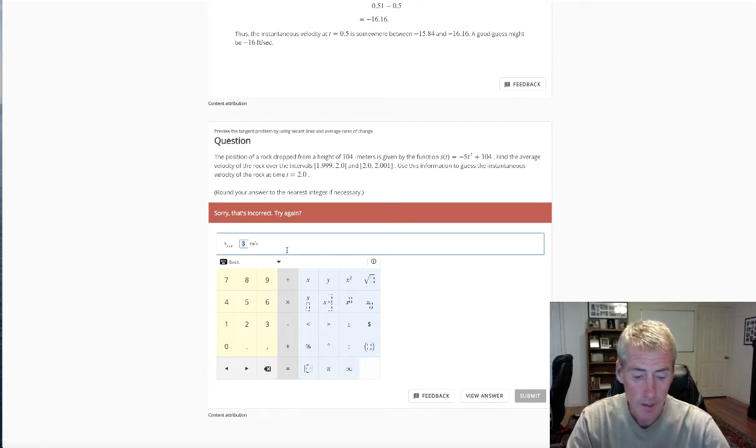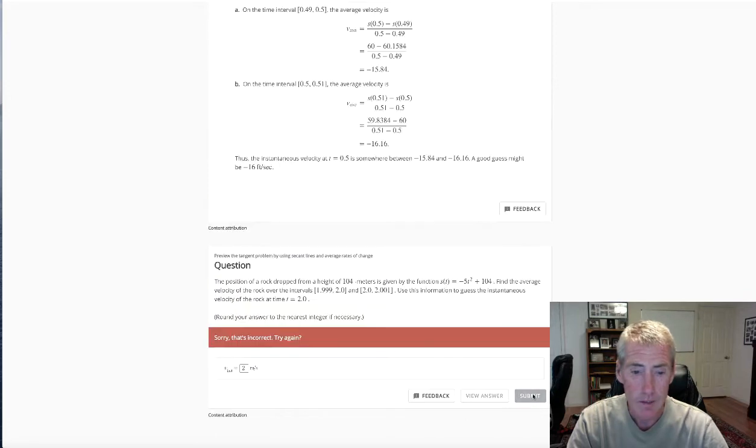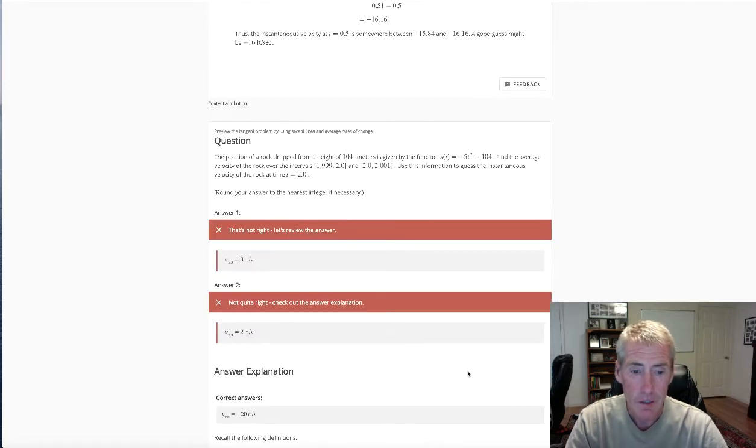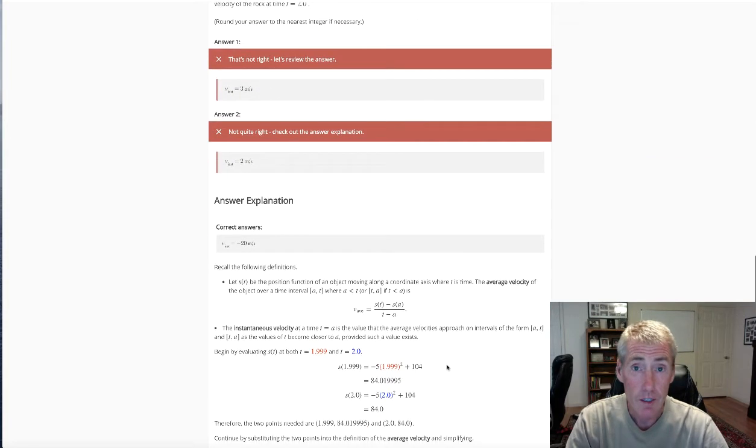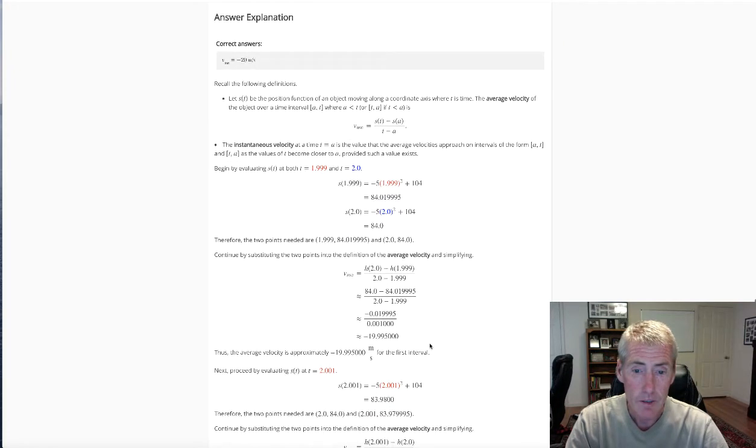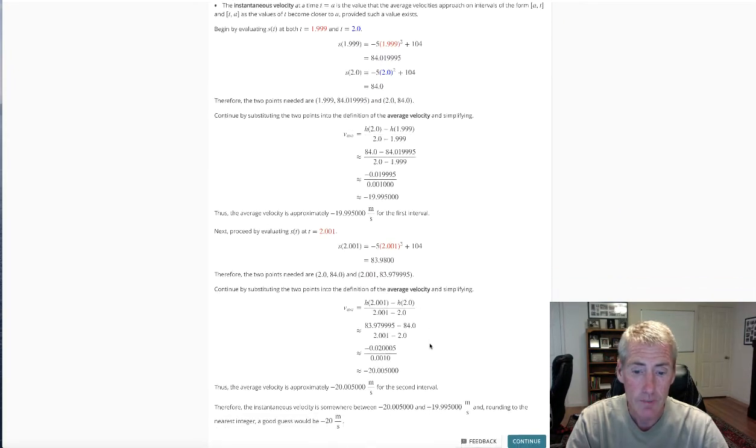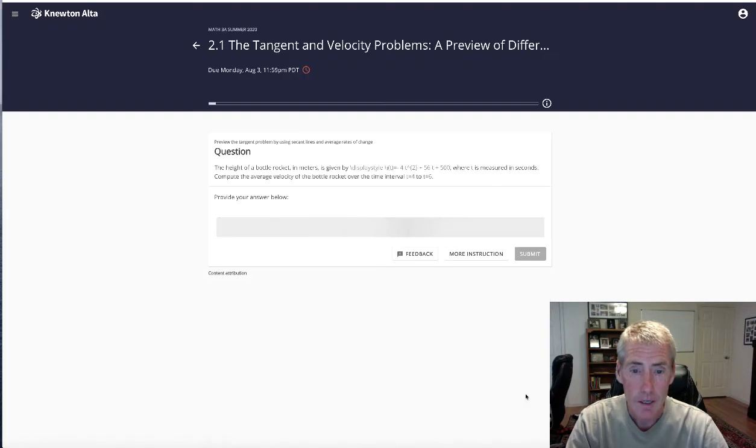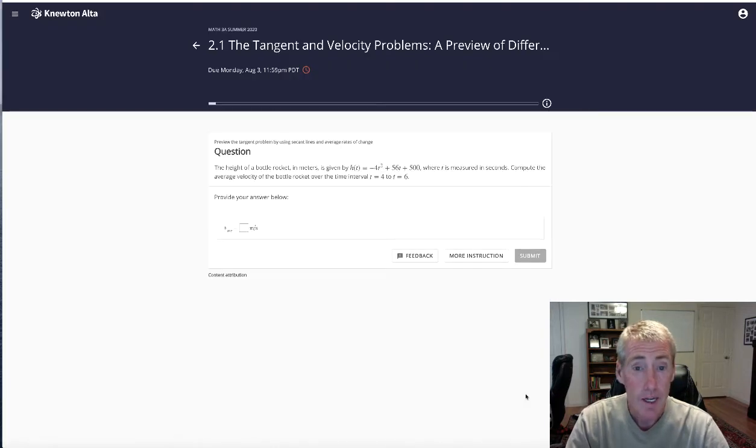So you could then try another answer. Maybe the answer is 2. And then you say submit. And they say, no, sorry, you've tried twice. Here's our explanation. You should have gotten a negative 20. And here's why. So you plug in these numbers and they explain how to do it. And then you say, all right, I'm ready to continue. And then they create a similar example. So hopefully, if you got it wrong the first time, hopefully you've learned from that mistake and then you'll get it right the next time.